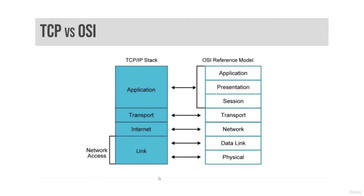The TCP/IP application layer combines the session, presentation, and application layers of the OSI model. Most of these protocols use a client-server architecture, where a client connects to a listening server, such as SSHD. The clients and servers use either TCP or UDP, or sometimes both, as a transport layer protocol. TCP/IP application layer protocols include Secure Shell, Telnet, FTP, and many others.